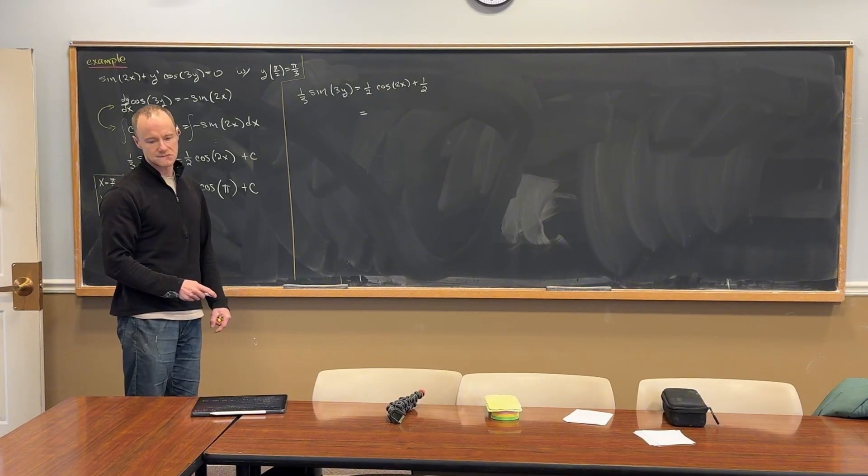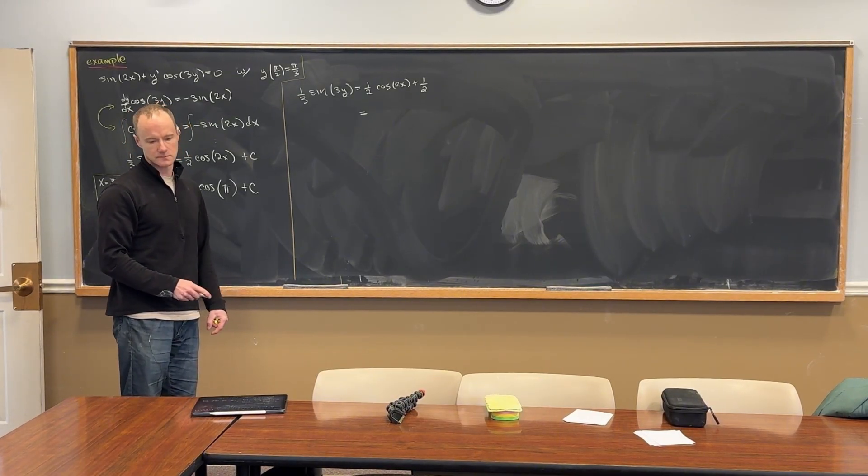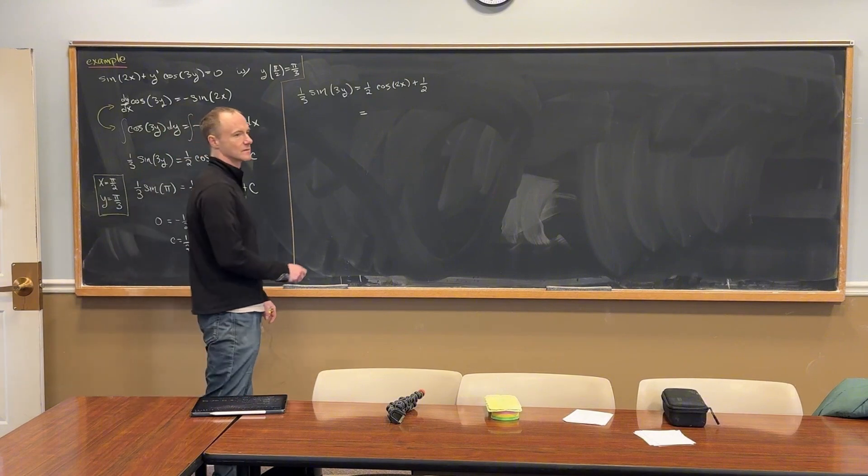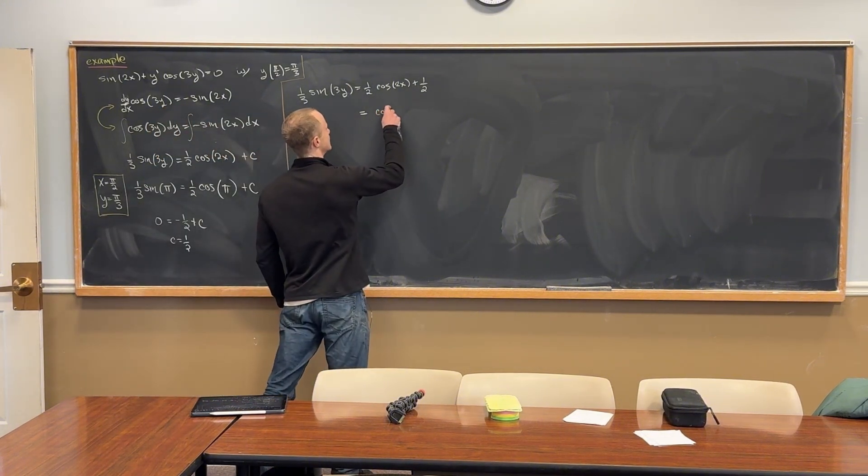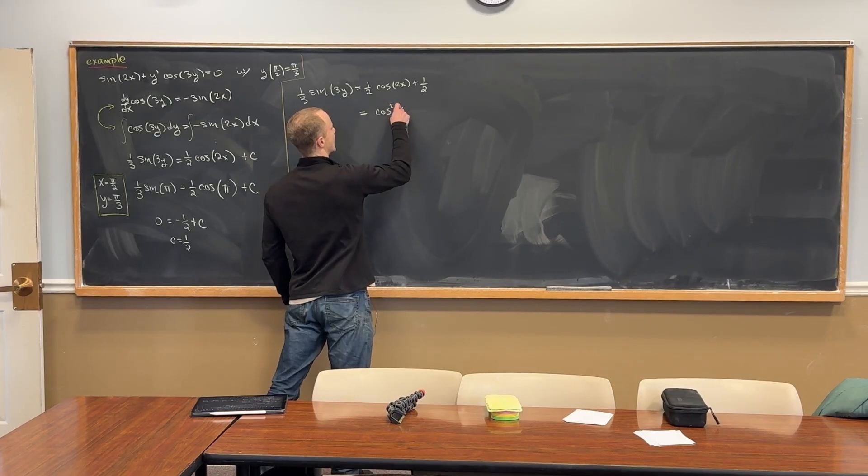It's, I don't know, obscure-ish. It's the cosine squared. This is equal to cosine squared of x.